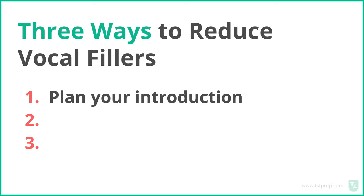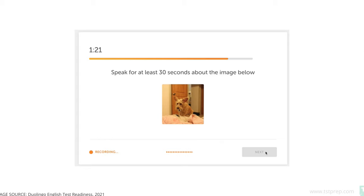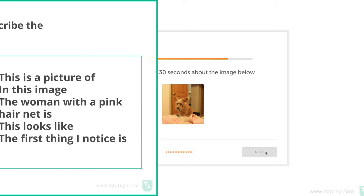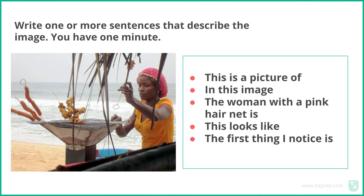Three ways. The first way is to plan your introduction. You can have an idea of what you're going to say when you see a picture like 'speak about the photo.' Instead of saying 'uh, this is um a picture of a woman and uh,' you can know that you're going to start every time with 'this is a picture of,' 'in this image,' or 'the first thing I notice is.' That's one way to avoid vocal fillers like 'uh' or 'um.'